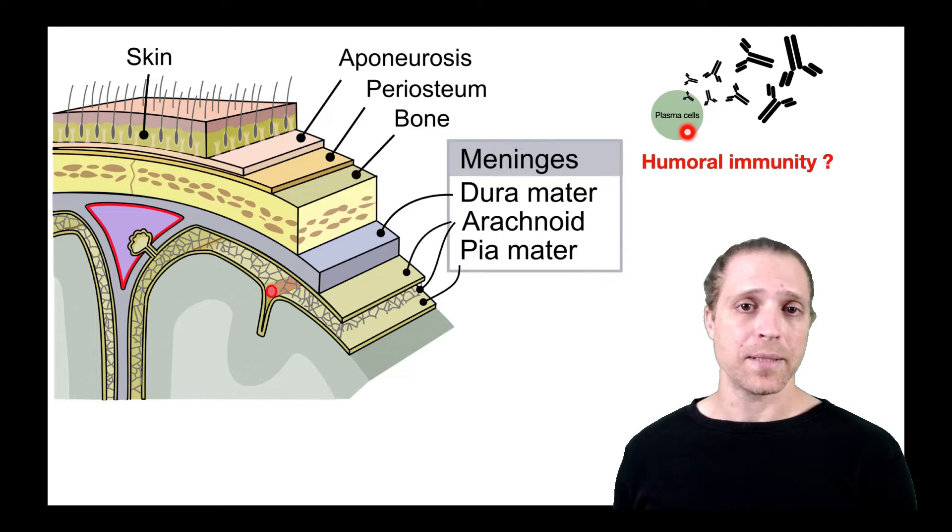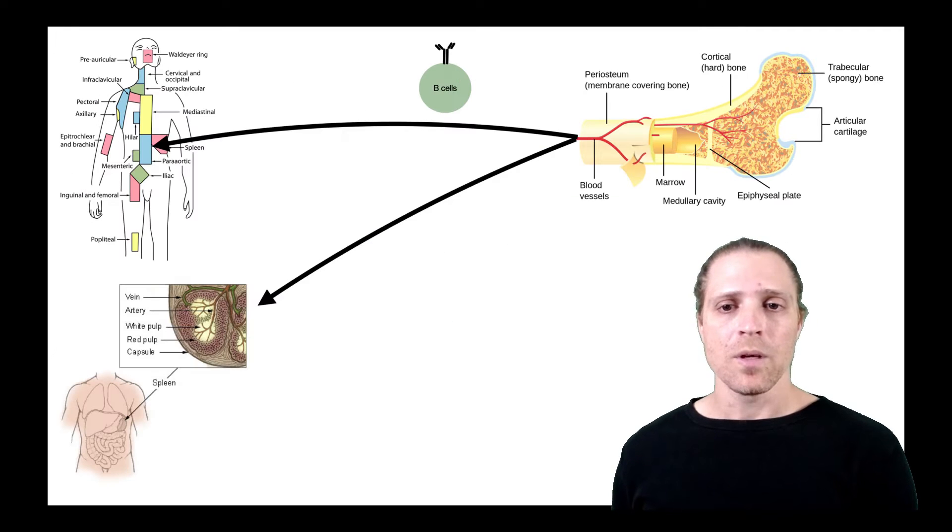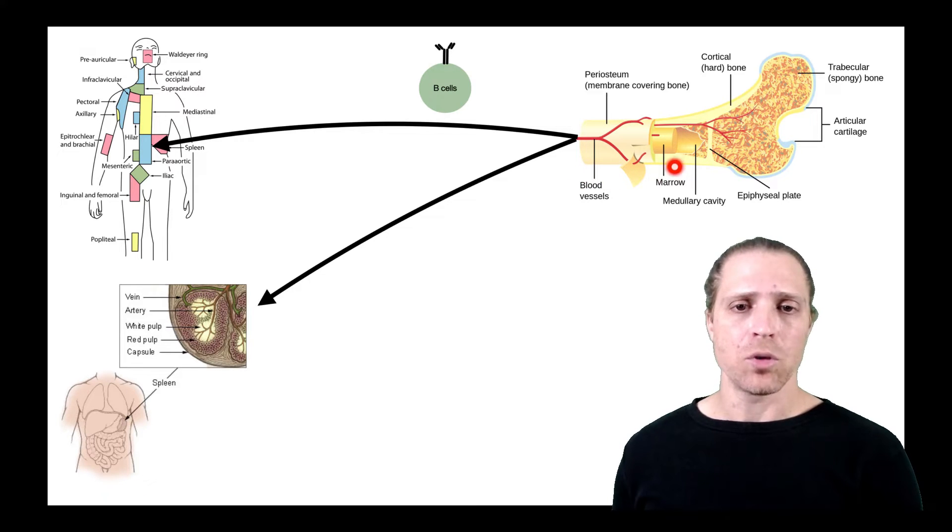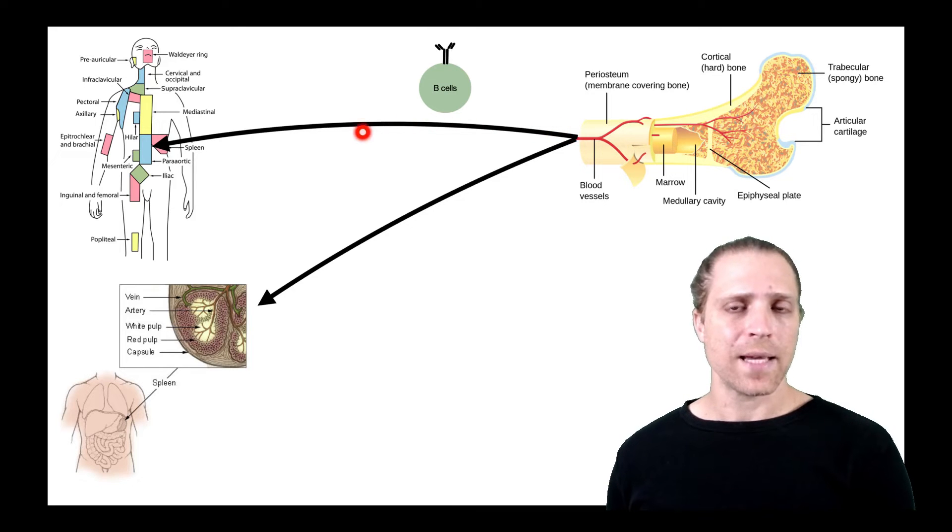To understand the role, we need to understand that B cells are formed in the bone marrow, which is a primary lymphoid organ, and from there they migrate into secondary lymphoid organs such as the lymph nodes as well as the spleen.